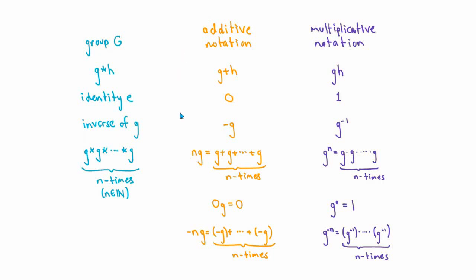Similarly, in groups where the binary operation is more like addition, we usually refer to the identity element as 0 and the inverse of an element g as minus g, whereas if the group operation is more like multiplication, we refer to the identity element as 1 and the inverse of g as g inverse. If we want to combine an element g with itself n times, in additive notation we denote that by writing ng, whereas in multiplicative notation we write g to the n. By convention, 0g is the identity element in additive notation, and g to the 0 is the identity element in multiplicative notation.